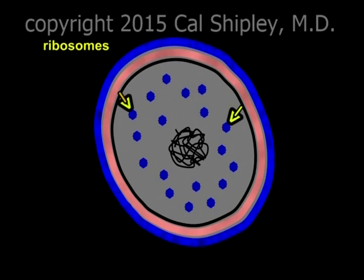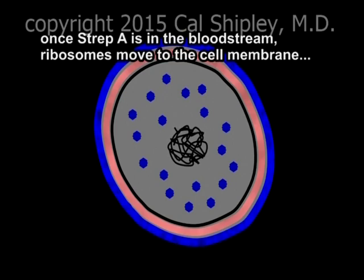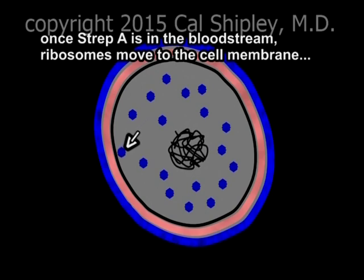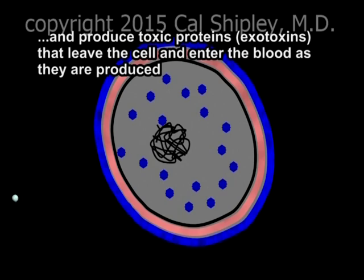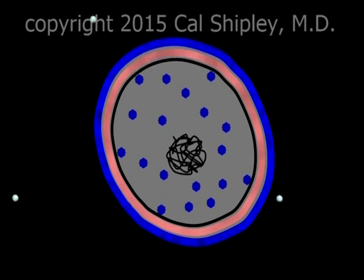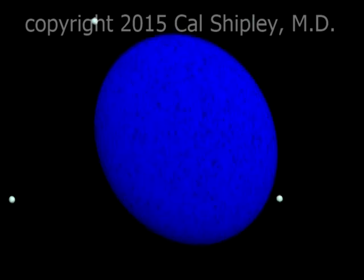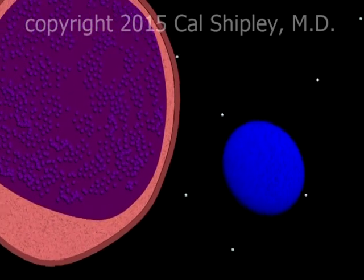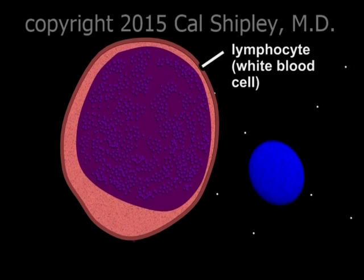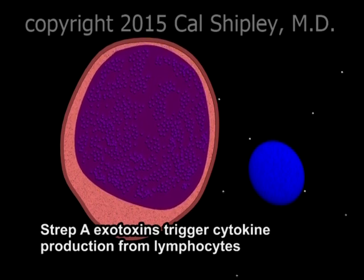Also within the cell are particles known as ribosomes. Ribosomes use the instructions contained in messenger RNA to link amino acids together, forming proteins. Once the bacterium is in the bloodstream, ribosomes migrate to the cellular membrane. Once at the cellular membrane, they begin to produce a protein known as an exotoxin, also sometimes referred to as a superantigen. The exotoxin is excreted from the cell into the intracellular space, where it binds to receptors on T cell lymphocytes.